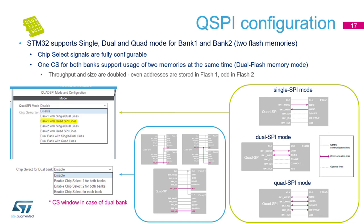The Quad SPI interface is fully configurable. STM32 supports single, dual, and quad mode for bank 1 or bank 2. In this picture you can see the difference between setups — single, dual, and quad SPI modes use different numbers of data lines. If you use dual bank, there is also an option for chip select selection in the configuration. In our case, the STM32F7 Discovery board has one memory with quad lines.